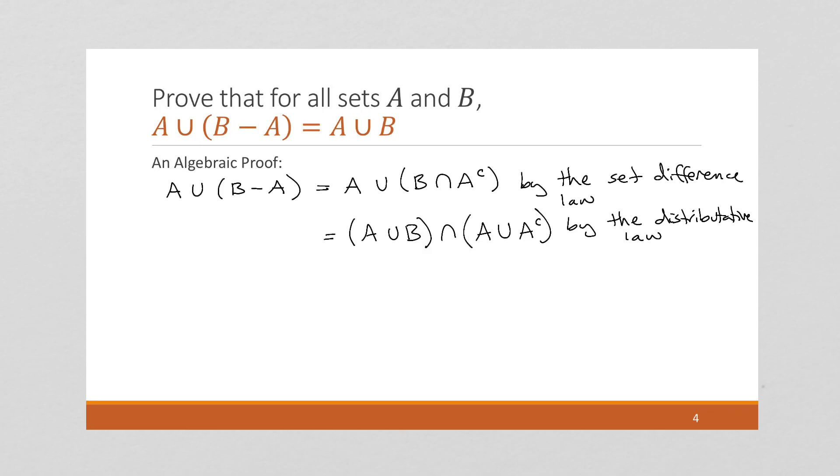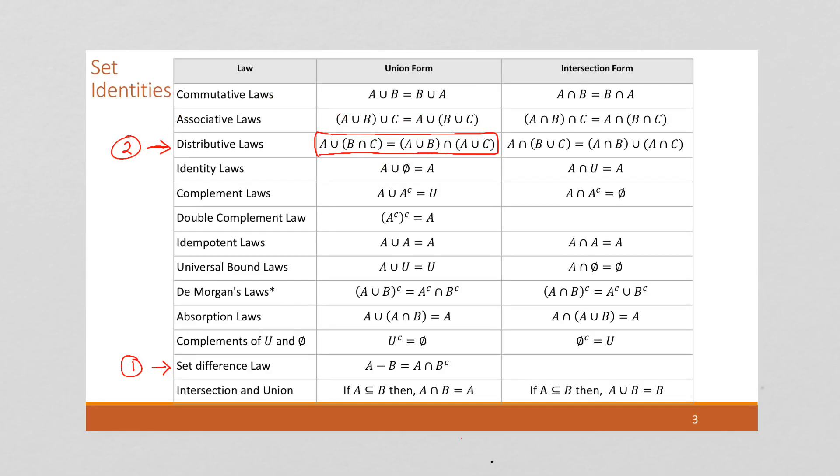And now, if I take a look at this part right over here, A union A complement, we come over to this portion. A union A complement gives us the universal set.